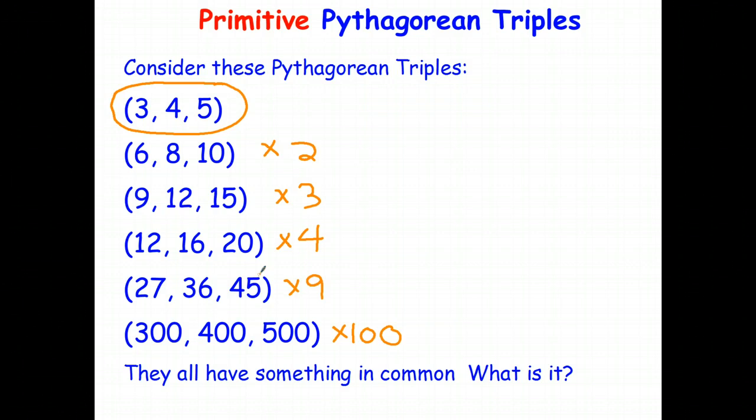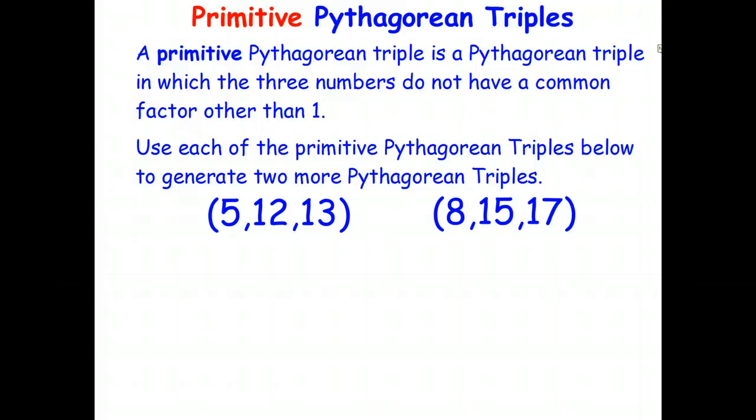So a primitive Pythagorean triple can't have any common factors in the three numbers. Once you know one Pythagorean triple, a primitive Pythagorean triple, you can go ahead and generate as many more Pythagorean triples as you wish.